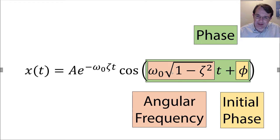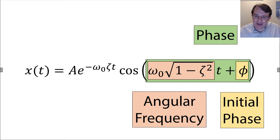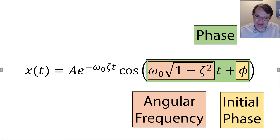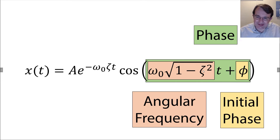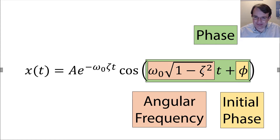The angular frequency is multiplied by the square root of 1 minus zeta squared, which has a value less than 1. So the system will oscillate at a slightly lower frequency than the undamped simple harmonic oscillator. However, if zeta is small, because it's a zeta squared term, the damped frequency will be pretty close to the natural frequency of the system — but just a little bit lower.